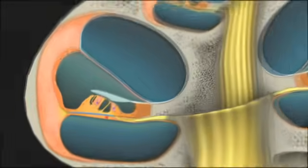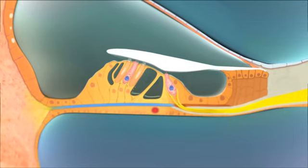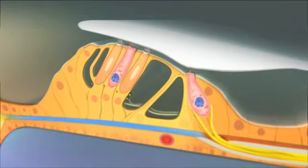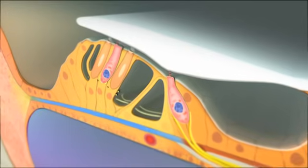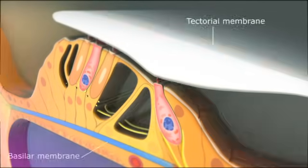The scala media includes structures from the tectorial membrane, basilar membrane, and hair cells, which sense the mechanical forces. The hair cells are located between the tectorial and basilar membranes.